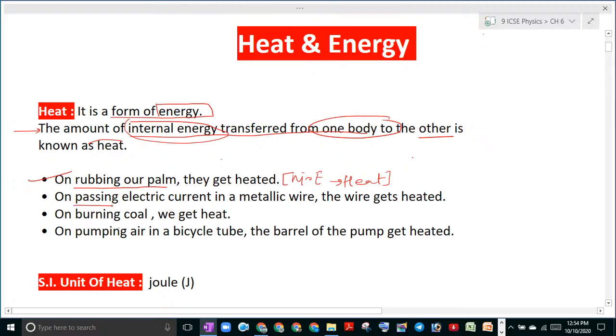The next example is on passing electric current in a metallic wire, the wire gets heated. So whenever there is an electric current in a wire, that means there is electrical energy. That means electrical energy is converted into heat.